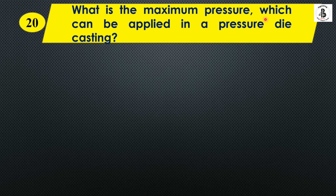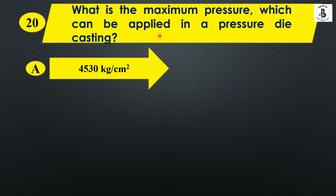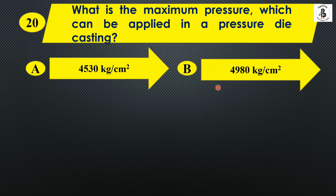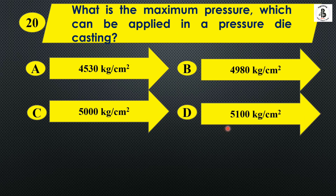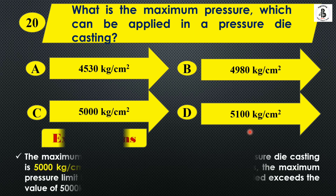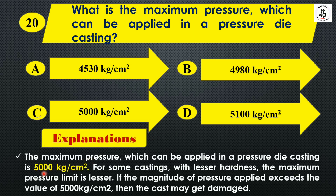Question twenty: What is the maximum pressure that can be applied in pressure die casting? Option A: 4530 kg/cm², Option B: 4980 kg/cm², Option C: 5000 kg/cm², Option D: 5100 kg/cm². The maximum pressure is 5000 kg/cm². For castings with lesser hardness, the maximum pressure limit is lower. If the magnitude of pressure applied exceeds 5000 kg/cm², it can be problematic. The answer is Option C: 5000 kg/cm².